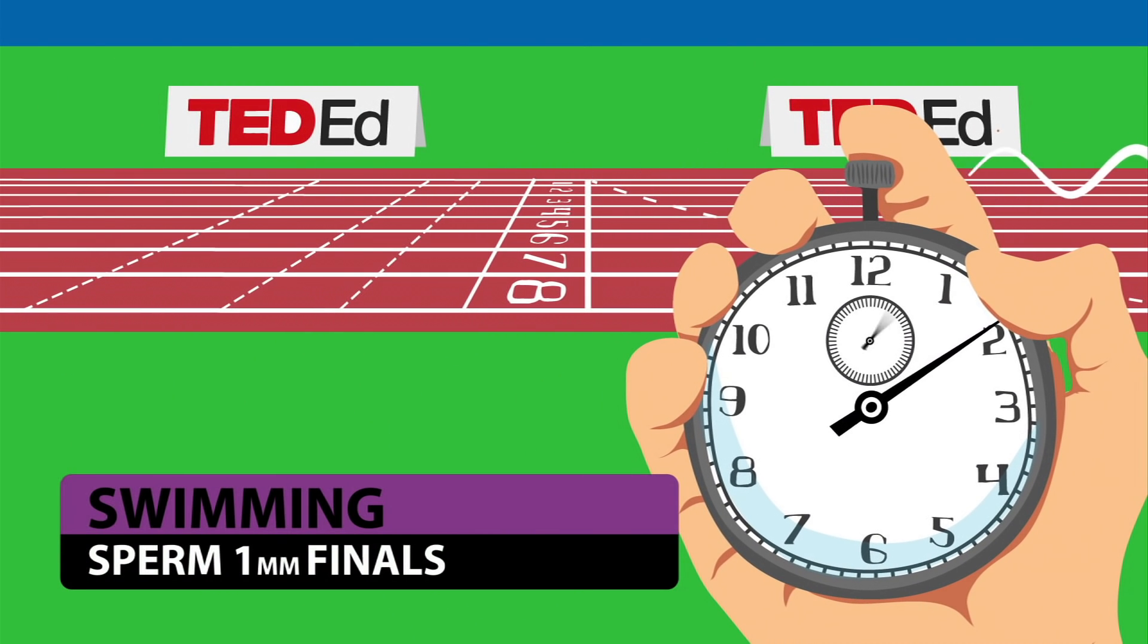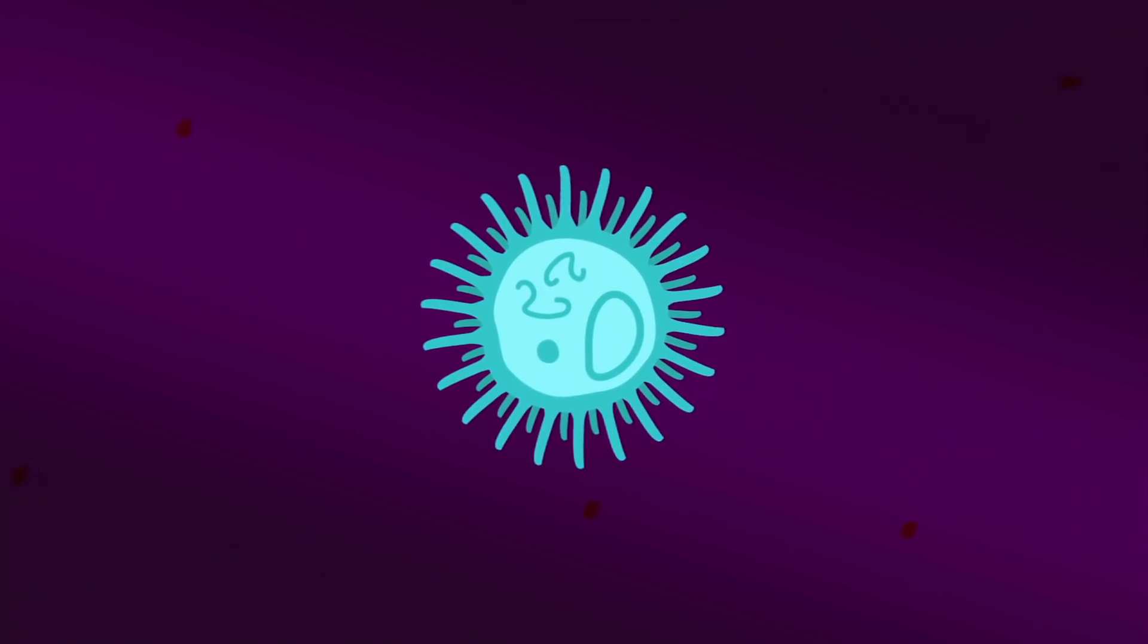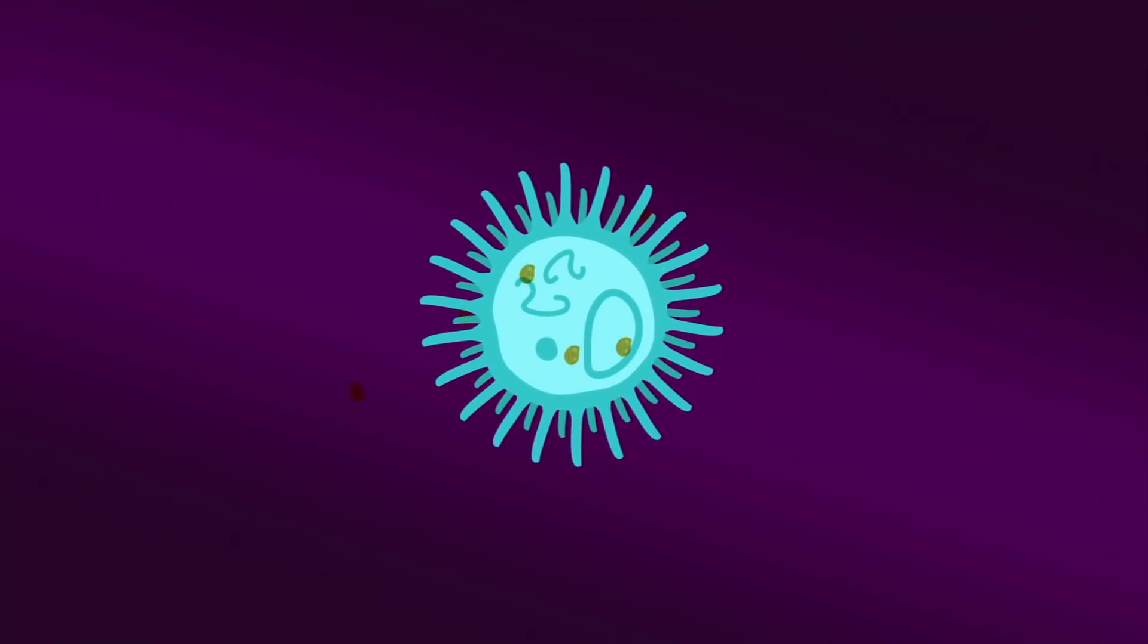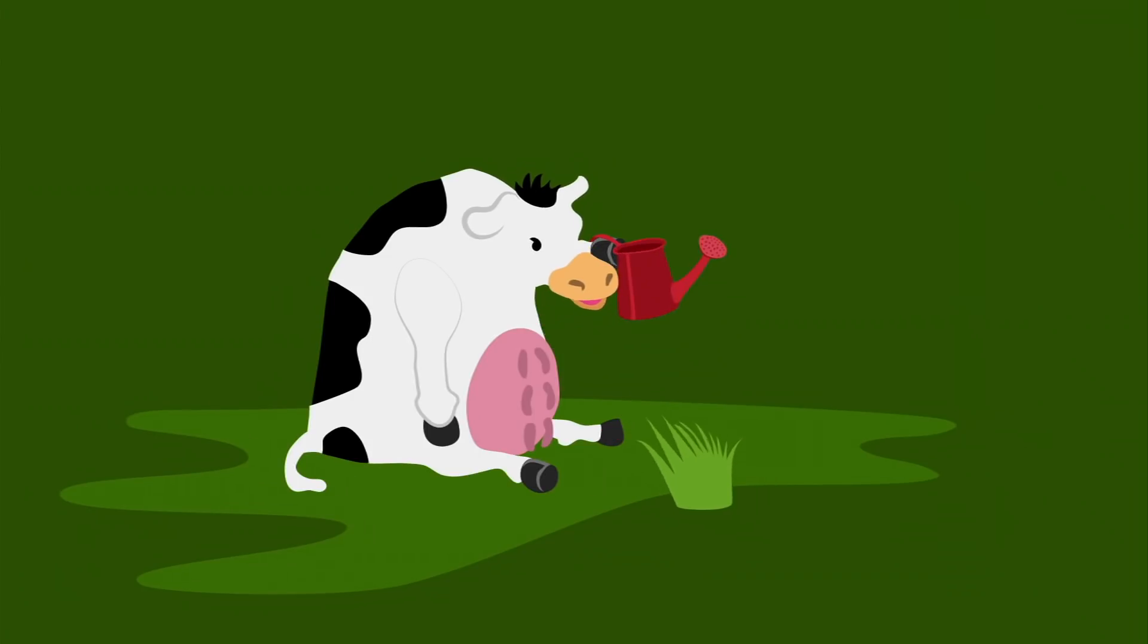So how do microbes manage to get anywhere? Well, many don't bother swimming at all. They just let the food drift to them. This is somewhat like a lazy cow that waits for the grass under its mouth to grow back.